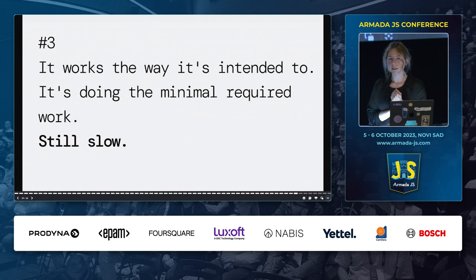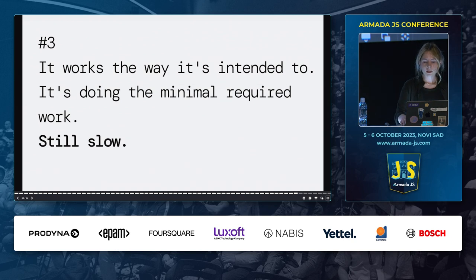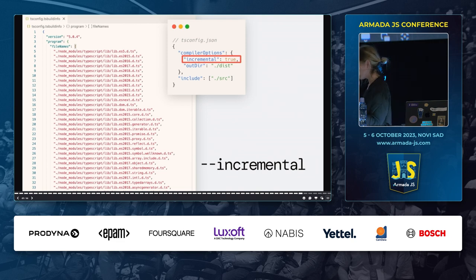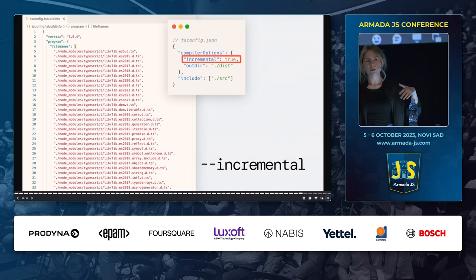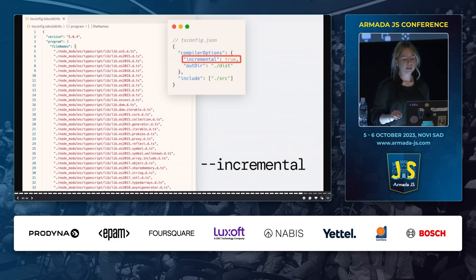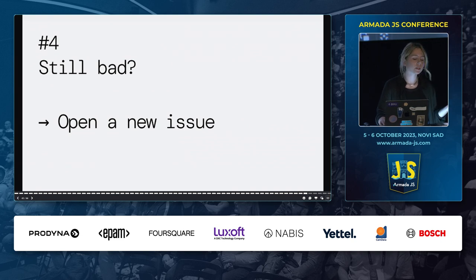Let's say you did all of that — fixed your TypeScript configuration, applied all the refactoring and type fixes — but it's still slow. What you can do now is use the incremental flag. By setting it in your compiler options, you tell TypeScript it can cache information about the compilation. The next time it has to recompile the project, it will only do the minimal required work — recompiling only the files that were changed. And if it's still bad, open a new issue — provide the trace output, a reproduction link to a repository if it's public, and as much information as possible.